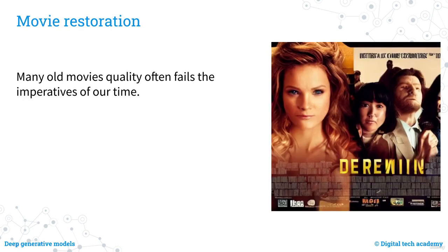Generative models can be used for movie restoration by using machine learning algorithms to analyse and enhance the quality of old films. This can include upscaling the resolution to ultra HD, increasing the frame rate, removing noise, and adding colour to black-and-white films. By using these techniques, it is possible to improve the visual quality of old movies, making them more accessible and enjoyable for modern audiences.